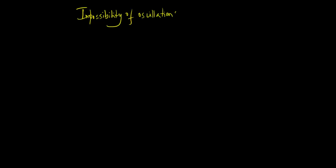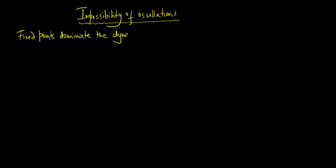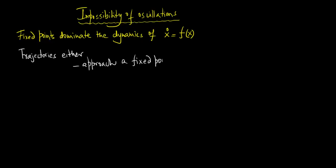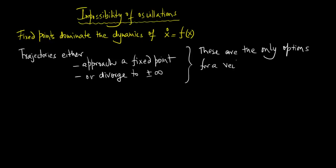Our next subheading is the impossibility of oscillations. By now we are quite familiar that fixed points dominate the dynamics of x dot is equal to f of x. Trajectories either approach a fixed point or they diverge to plus or minus infinity. In fact, these are the only options for a vector field on the real line.